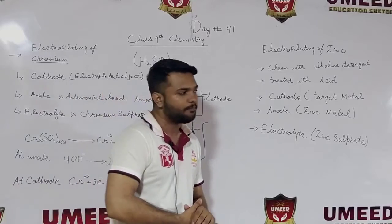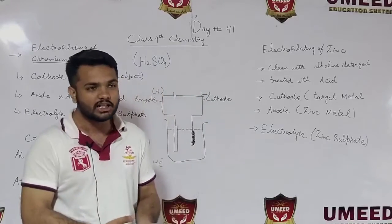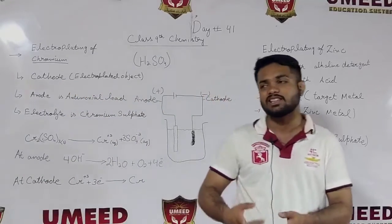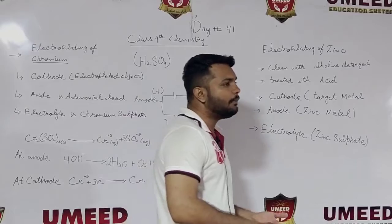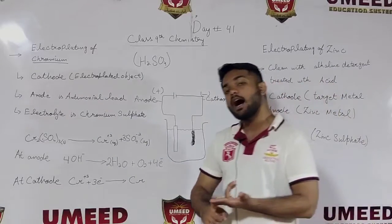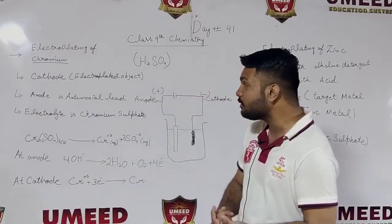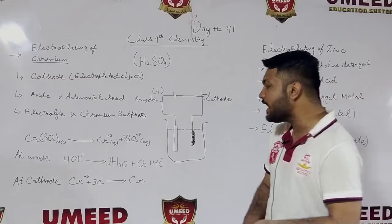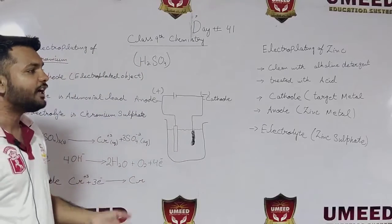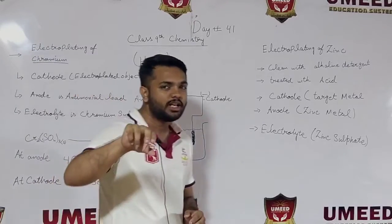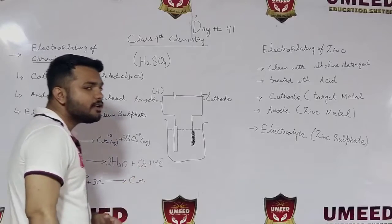The main thing here is the electrolyte. The condition for the electrolyte is that the salt solution should always match the anode metal. When silver was electroplated, we used silver's salt solution. Today we will use chromium's salt solution, which is called chromium sulphate. To this chromium sulphate solution, we add some sulfuric acid - this is the special condition for chromium electroplating.